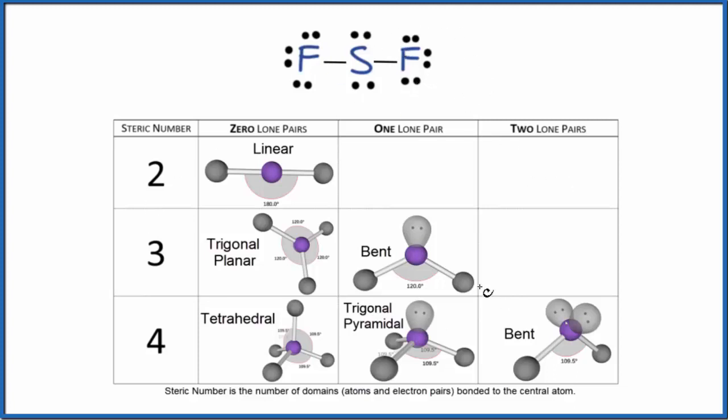So we have this chart here, and if we look at the number of things attached to this central sulfur atom, we can see we have two atoms here, and then two lone pairs. So we have one, two, three, we have four things on our central sulfur atom.